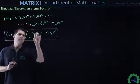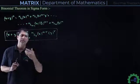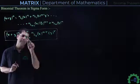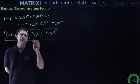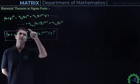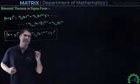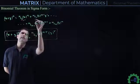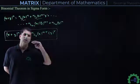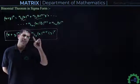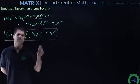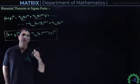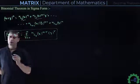Now, if we ask how we wrote it this way — if you change the values of R, by varying R, you get each term of the expansion. For example, if R = 0: NC0 · X^N · Y^0 — that is the first term. If R = 1: NC1 · X^(N-1) · Y^1 — that is the second term. Similarly, all terms are covered, and sigma means there is a plus sign between them. So (X + Y)^N = Σ (R=0 to N) NCR · X^(N-R) · Y^R. Now let's see this with examples.